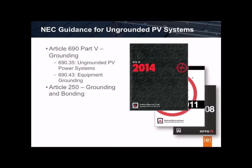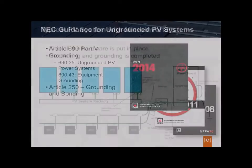These NEC requirements were developed to bring the U.S. PV industry in line with the rest of the world by adopting some of the European techniques and experiences for installing ungrounded systems, including overcurrent protection and disconnects on all circuit conductors, ground fault protection on all systems, jacketed or sheathed multi-conductor cables or raceways, additional warning labels, and inverters listed specifically for use in ungrounded arrays.